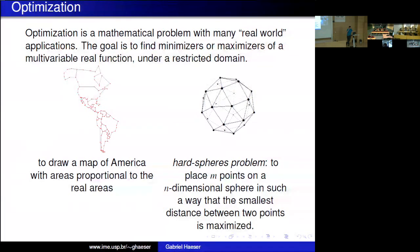I will show you how we can formulate this map problem. Another interesting problem is the hard spheres problem: we have an n-dimensional sphere and want to place some points on its surface so that the distribution is homogeneous. We can do this by maximizing the smallest distance between any pair of points. This is called the hard spheres problem, and we'll discuss it a bit later.